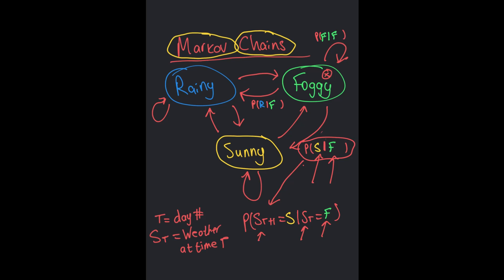This actually explains the Markov property, because what I didn't write was all the other historical information. I'm only looking at s_{t+1} based on s_t. You could condition on s_{t-1}, s_{t-2}, and so on — but in a Markov chain all of that other information is completely irrelevant. That's the Markov part: it's a chain because we bounce around states based on these probabilities, and it's Markov because we only care about the current state.